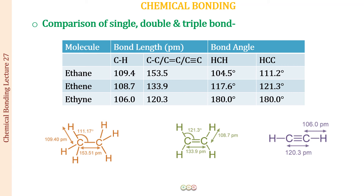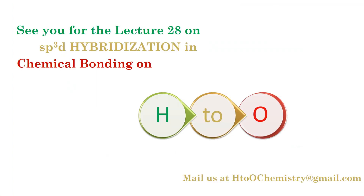That would be all for this lecture. I hope you have understood this very important comparison of bond lengths and bond angles. In the next lecture, we will be discussing hybridization involving d orbitals — starting with SP3d and then SP3d2 and so on. If you have any doubts, feel free to email us at h2ochemistry@gmail.com or put your doubts in the comment section. Please subscribe to the channel H2O and click the bell icon so you don't miss any new lecture. If you liked the lecture, please click the like button. Thank you and have a nice day!